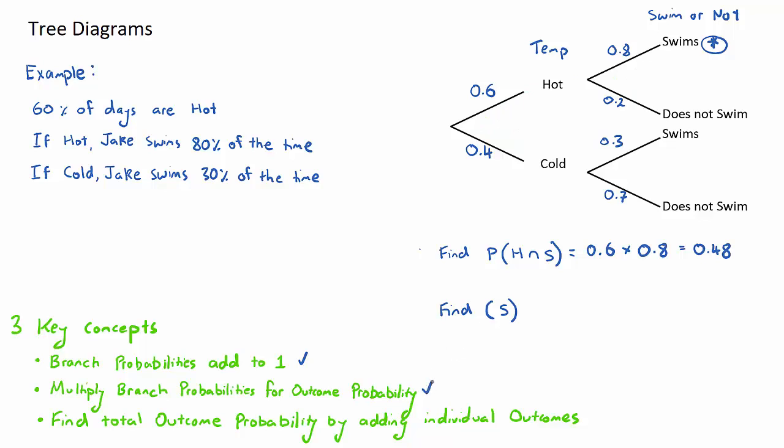The second question: find the probability that Jake swims. There are now two outcomes here. The day is hot and he swims, or the day is cold and he swims. We need to find the individual probabilities for each of these outcomes using the same process we just went through. This brings in the third key concept: when there is more than one outcome, we have two here, we just simply add them up.